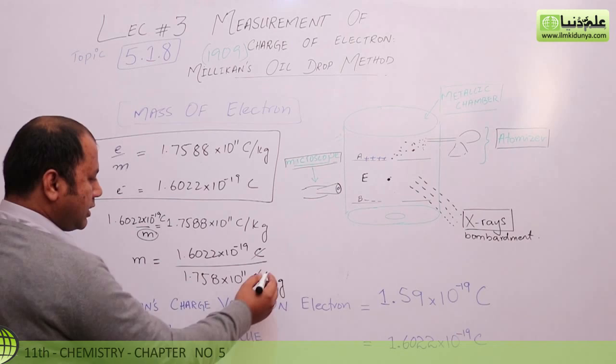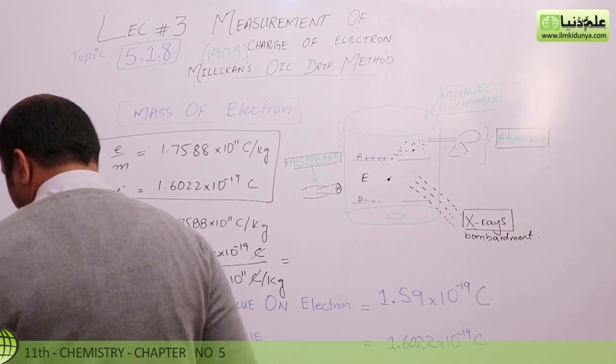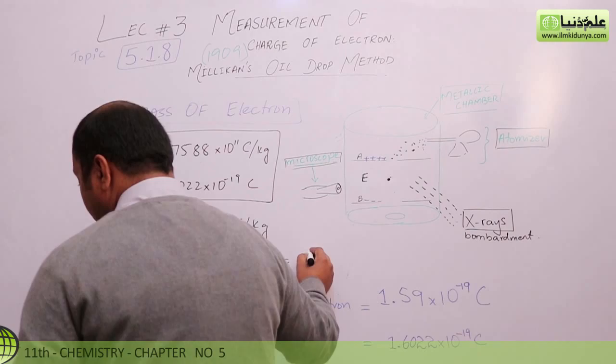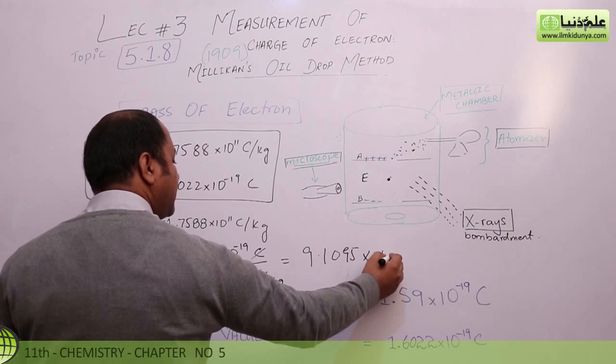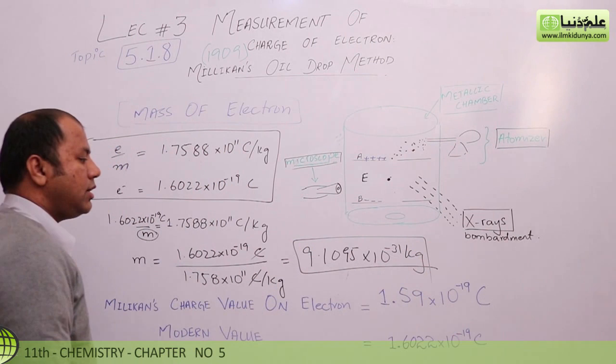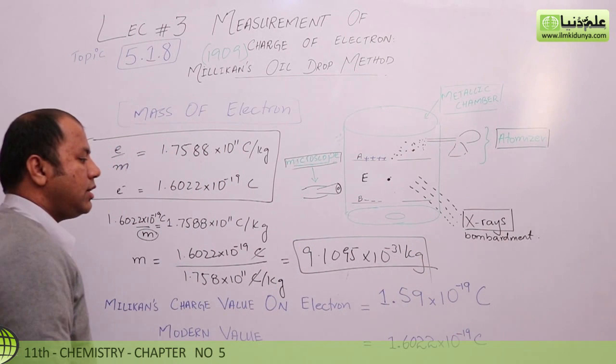Coulomb cancels with coulomb and you get the answer in per kg. Dividing 1.6022 × 10⁻¹⁹ by 1.7588 × 10¹¹, the mass of the electron comes out to be 9.1095 × 10⁻³¹ kg. So from those previous experiments, you can also conclude the mass of one electron. I hope you have got something out of this.